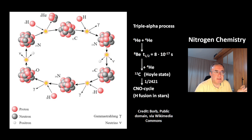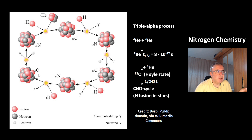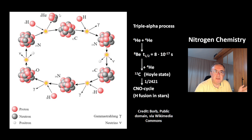Merger with another proton gives you nitrogen-13. Then you get carbon-13. Merger with another proton gives you nitrogen-14, and then oxygen-15, then nitrogen-15. And if this nitrogen-15 isotope is hit by a proton, then you get a helium-4 isotope and back your carbon-12.